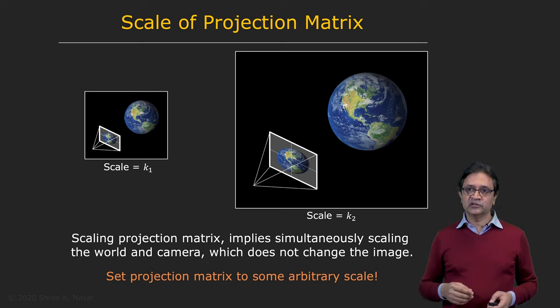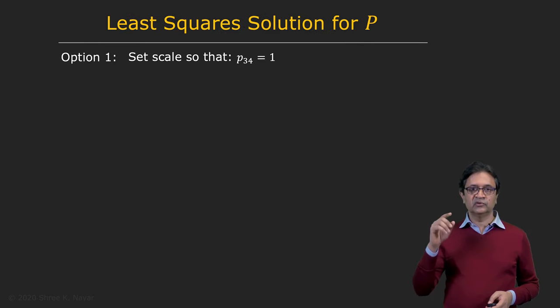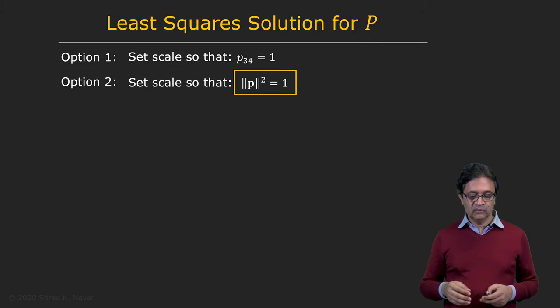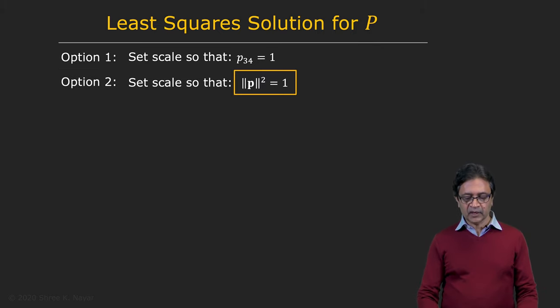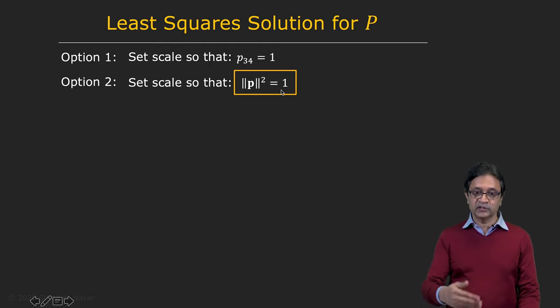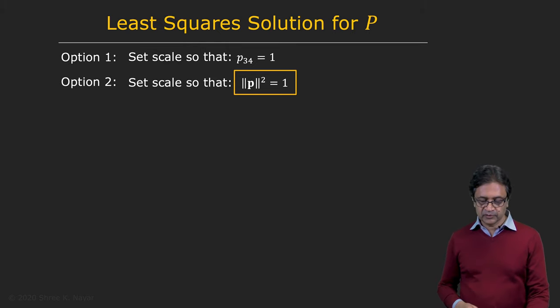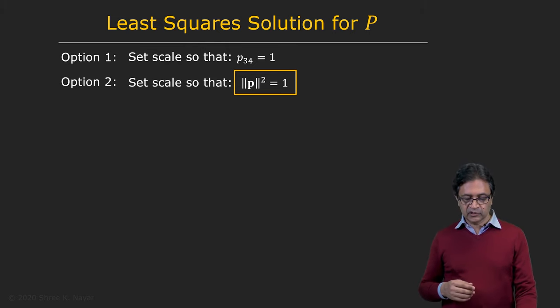So there's multiple ways to do this. One is we can just choose one of the elements of P, the 12 elements, and simply set that equal to one. That would be one way to do it. Or we could just say that the square of the magnitude of the vector P is equal to one. And this is what we choose because it's convenient for us in the way we want to formulate the problem. So we say P squared is equal to one.